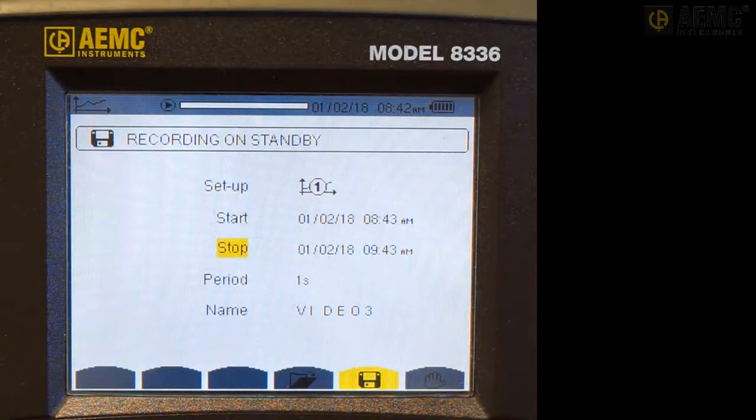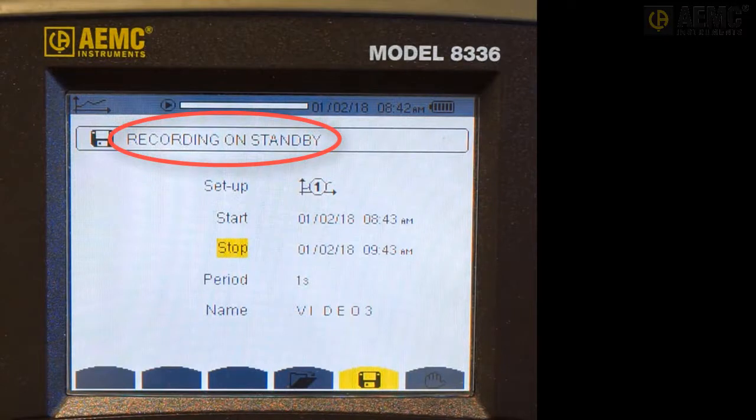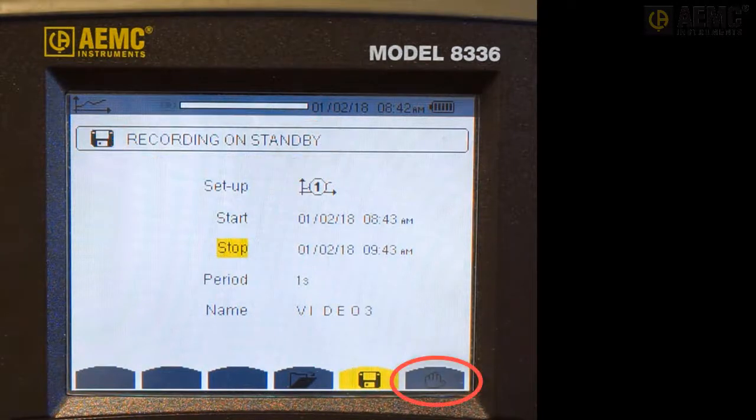Before a scheduled recording starts, the message Recording on Standby should appear at the top of the screen. This indicates all scheduled parameters have been accepted by the instrument and that there is sufficient memory for the recording. While the instrument is in Standby, the rightmost Function button changes to a Hand icon. This enables you to stop an active or pending recording. In addition, the Play icon at the top of the screen blinks, indicating that the instrument is ready to record. This icon blinks throughout the active recording session. When the recording is active, the message Recording in Progress appears on the screen.